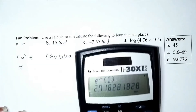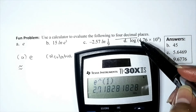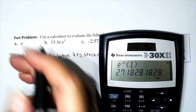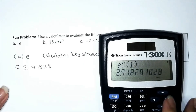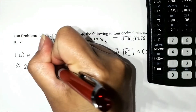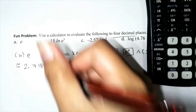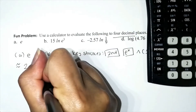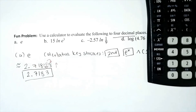The decimal approximation is about 2.71828. We're asked to round to four decimal places, so we locate the digit in the fourth place — that's the 2 — and look at the next digit, which is 8. Since 8 is five or higher, we round up, giving us 3. So to four decimal places, e is approximately 2.7183.